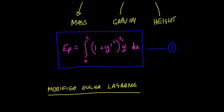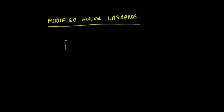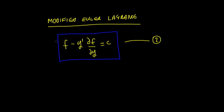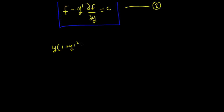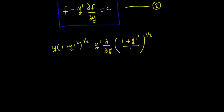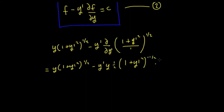We can use that along with the modified Euler-Lagrange equation: f minus y′ times (∂f/∂y′) equals c. We put our function f — which is (1 plus y′²)^(1/2) times y — into that equation. The second term involves y′ times the partial derivative of f with respect to y′. Differentiating gives a half times (1 plus y′²)^(−1/2) times 2y′, all equal to a constant c.